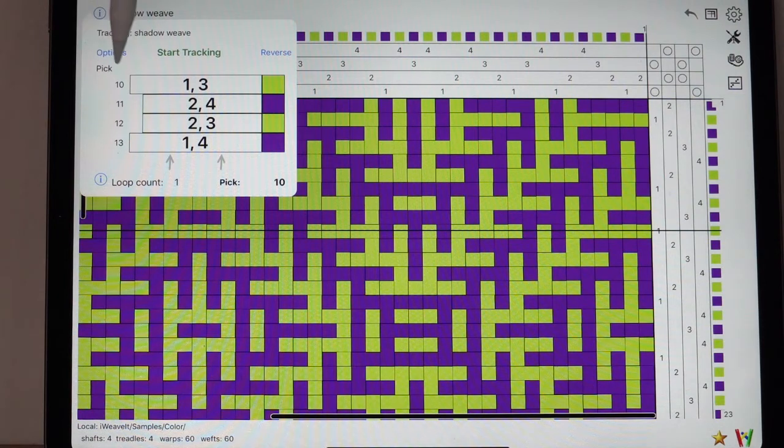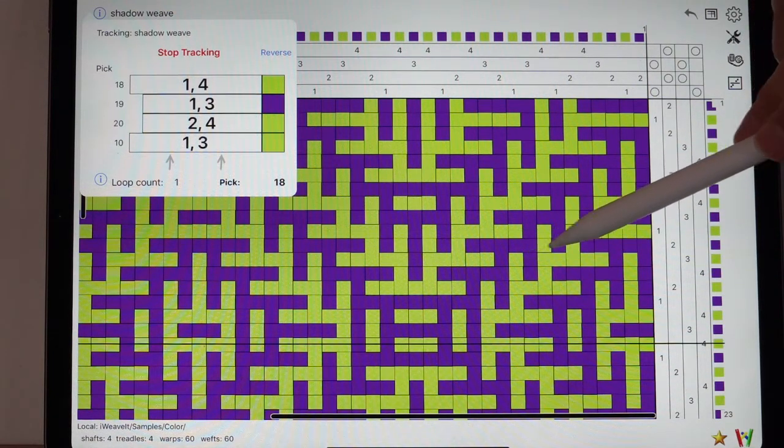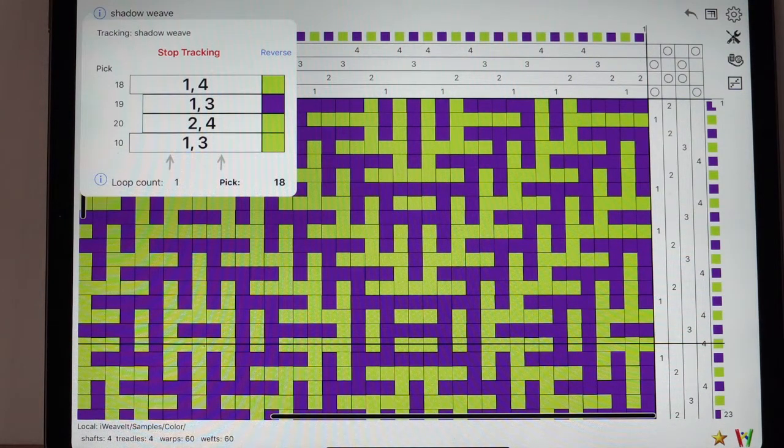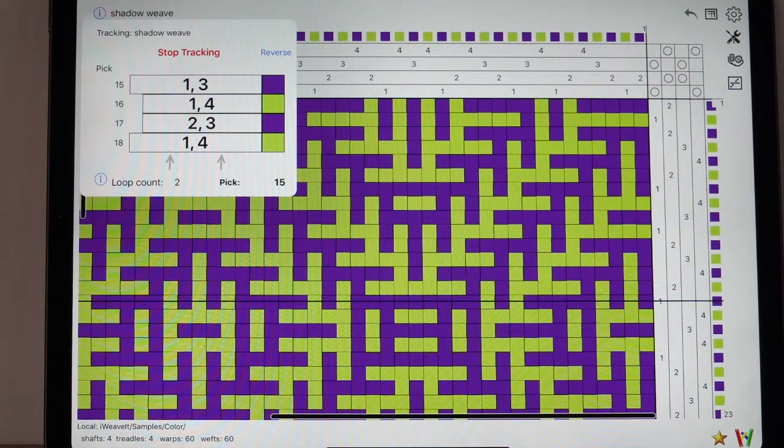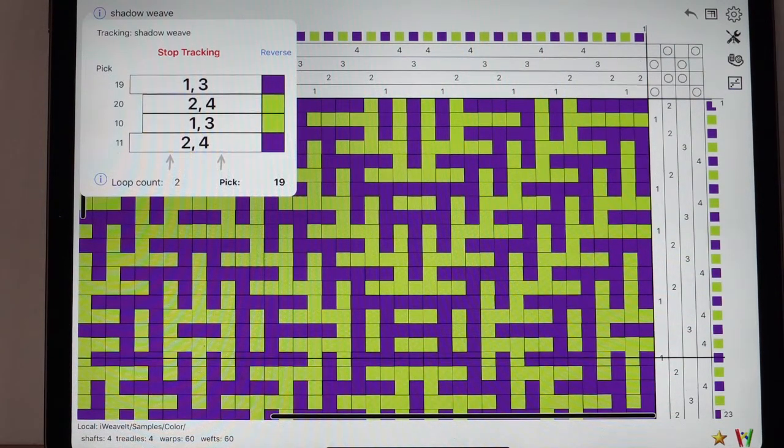All right, so now I'm doing pick 10, 11, 12, and 13. And that's in my loop. I start tracking. And now I'm doing 18, 19, and 20. But notice it comes back to 10 because that's the beginning of my next loop. Now I do 11, 12, 13, 14, 15, 16, 17, 18, 19, 20, and back to the beginning of that loop. And if the loop counter will advance with each loop and it keeps track of that for you.